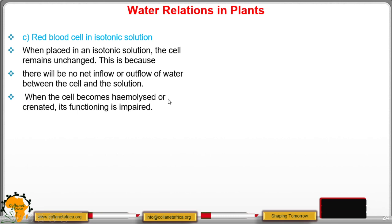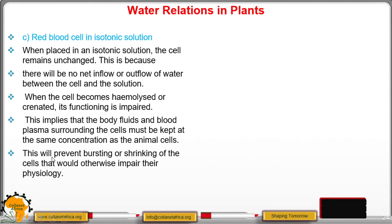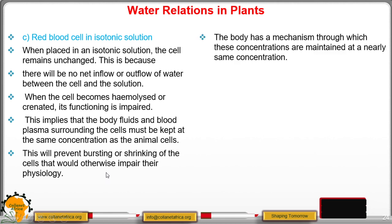When the cell becomes hemolyzed or crenated, its functioning is impaired — a cell which has already burst or has shrunk will not function effectively. This means that the body fluids and blood plasma surrounding the cells must be kept at the same concentration as the animal cells for them to function effectively, preventing bursting or shrinking that would otherwise impair or disrupt their physiology. The body has a way in which these concentrations are maintained at nearly the same levels.